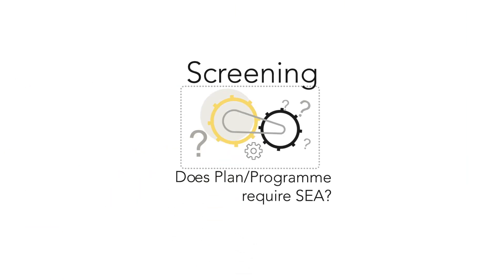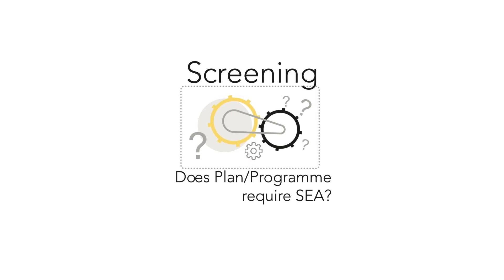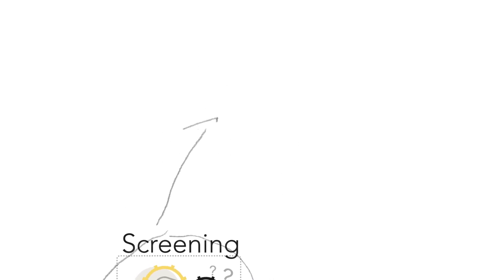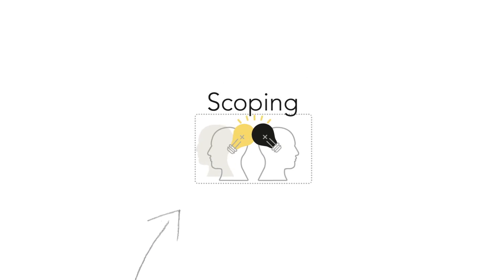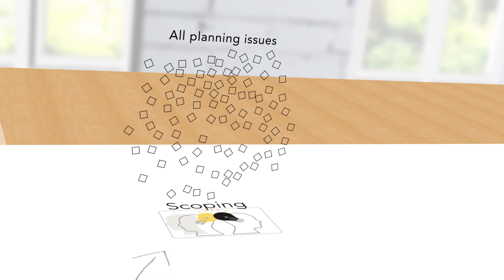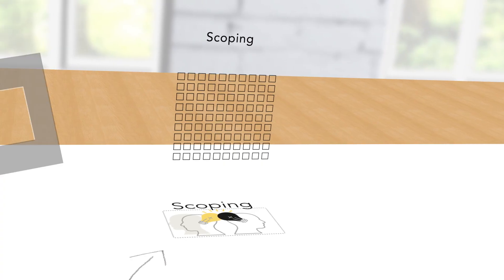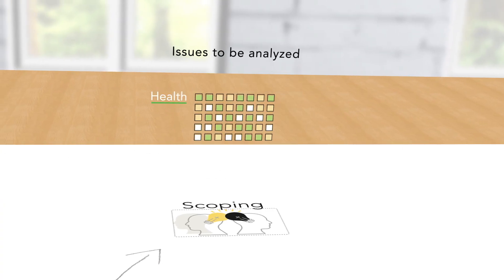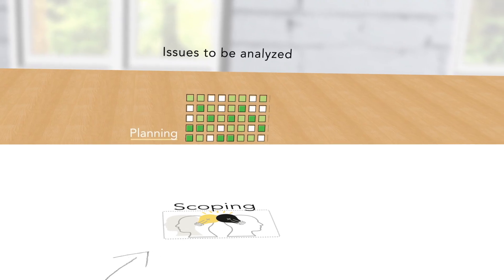SEA starts with Screening. This determines if SEA is actually needed. The protocol on SEA provides the criteria for this. If the answer is yes, the next step is called Scoping. This defines the issues addressed in the assessment. Establishing a clear scope early on focuses the work on what is actually needed and helps use resources effectively.